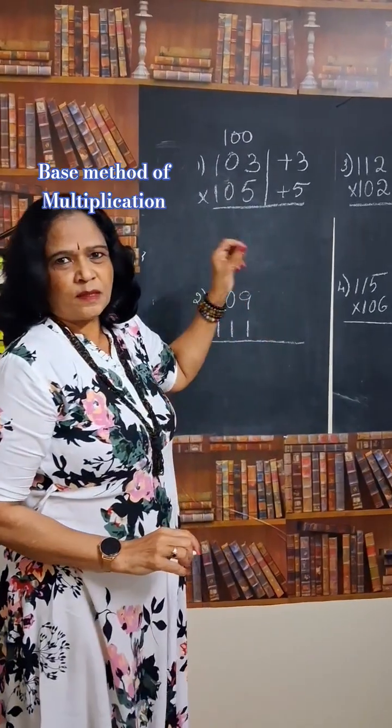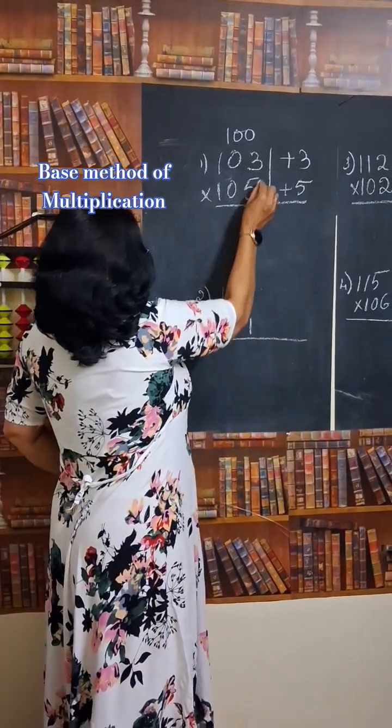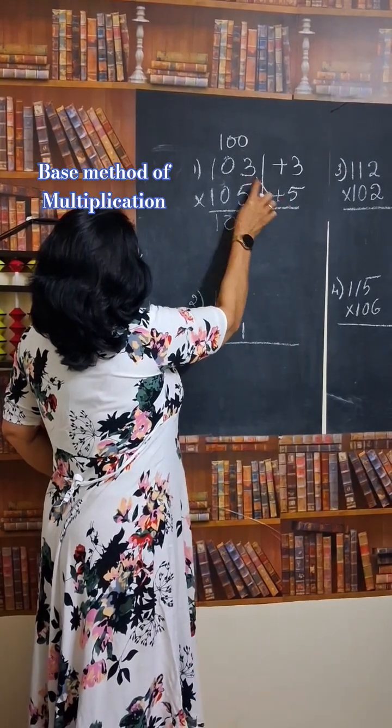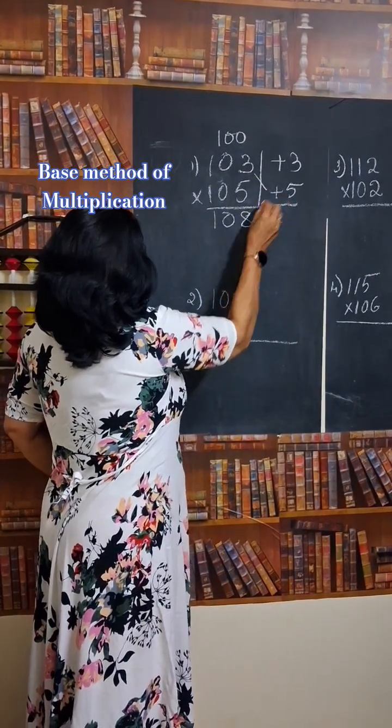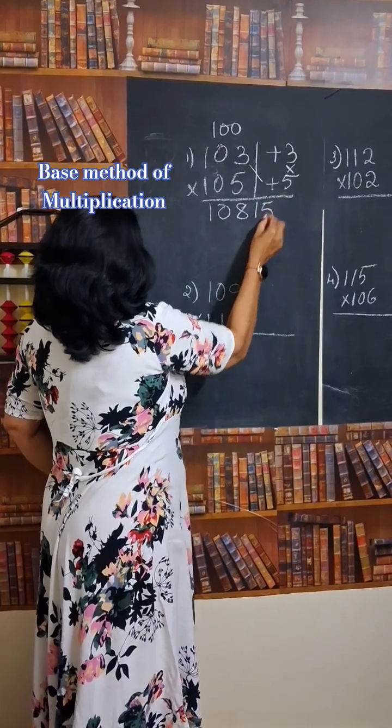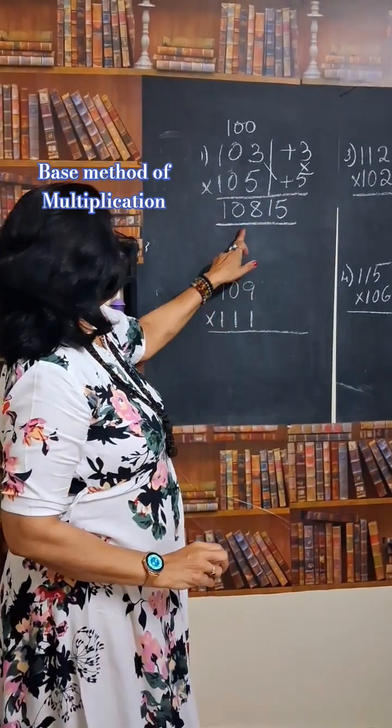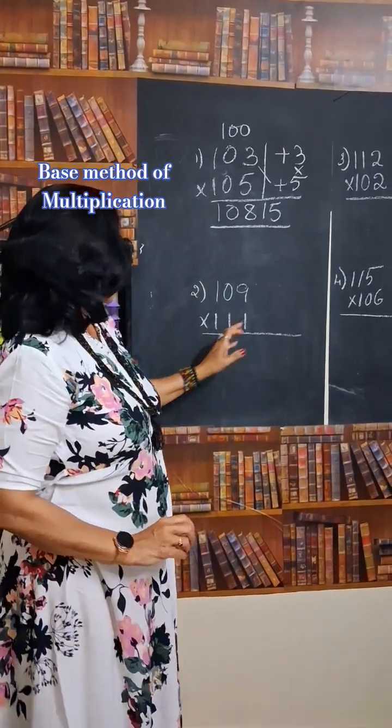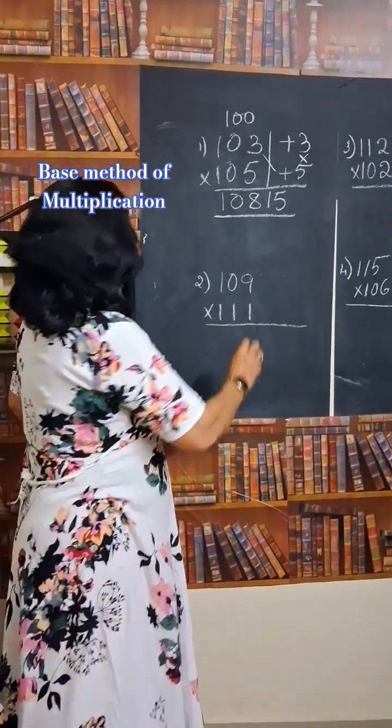Now you see the magic of your answer. Answer is 1, 0, 3 and 5 cross addition if you do 8. Multiply these 2. 3 into 5 is 15. This is the answer. 10,815 is the answer. Just let us see one more example.